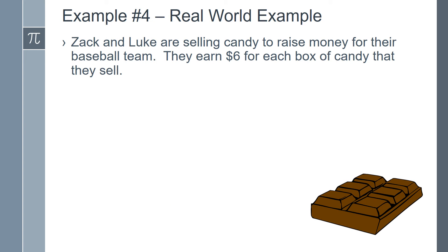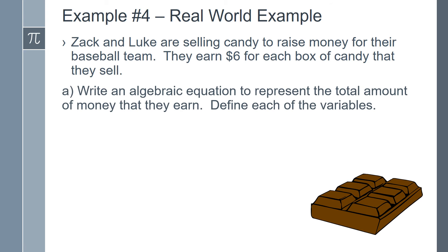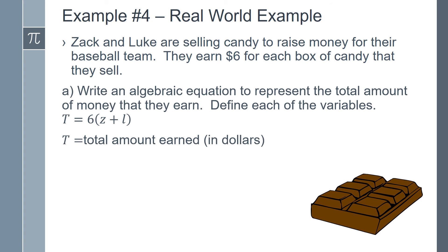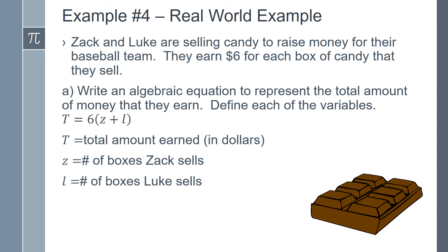As usual, we will look at a real-world example for the final problem. Zach and Luke are selling candy to raise money for their baseball team. They earn 6 dollars for each box of candy that they sell. Write an algebraic equation to represent the total amount of money that they earn and define each of the variables. Our equation is t equals 6 times (z plus l), where t is the total amount earned in dollars, z is the number of boxes that Zach sells, and l is the number of boxes that Luke sells.